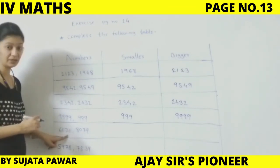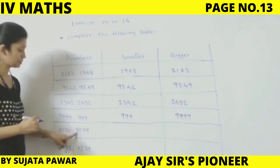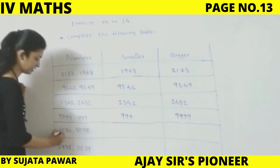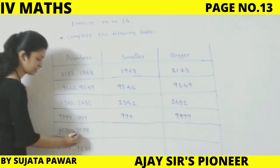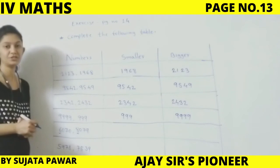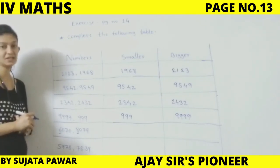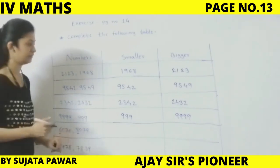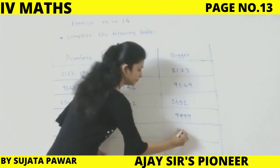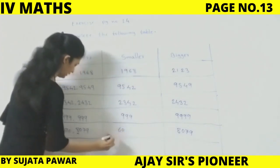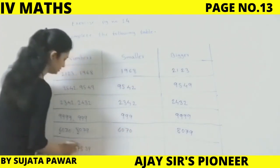Next: 6,070 and 8,079. The 100s place in 6,070 is 0 — empty. Now look at the 1000s place: here is 6 and here is 8. Which is the bigger number? Obviously 8 is bigger than 6, so 8,079 is the bigger number and 6,070 is smaller.